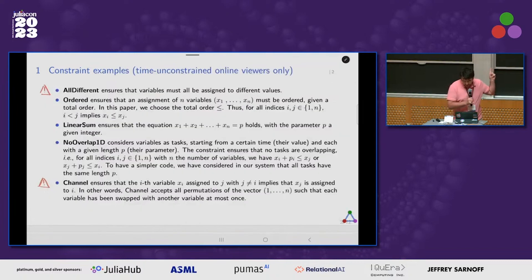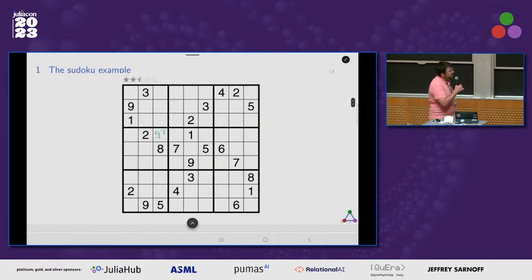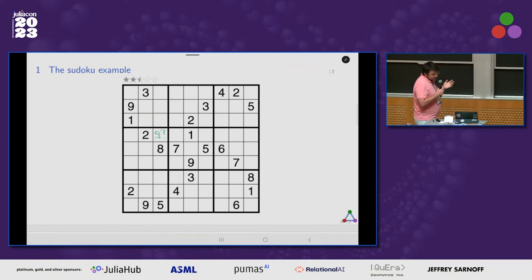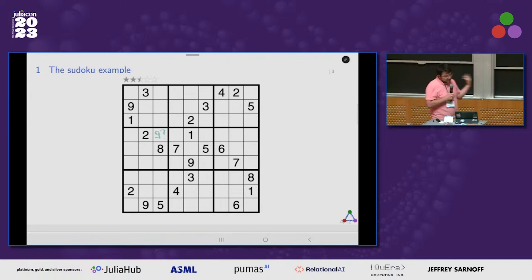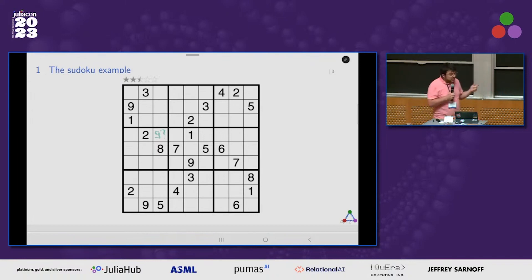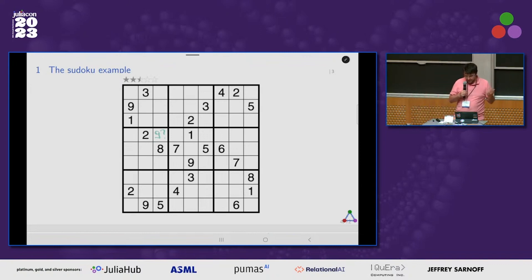This slide is for people watching online who can pause and see some examples. I will give one for the local people. This is a Sudoku — most people should know about it. The idea: we have a grid, we want to fill it with numbers from one to nine, and we have some constraints like each line, each column, and each block needs to have different values.